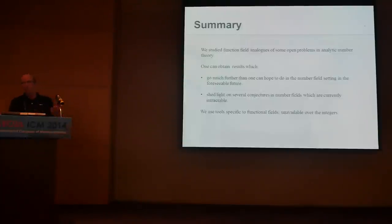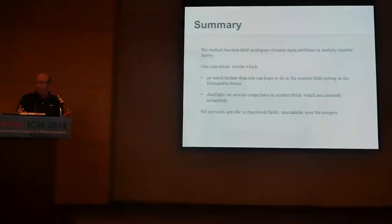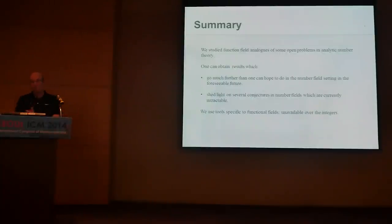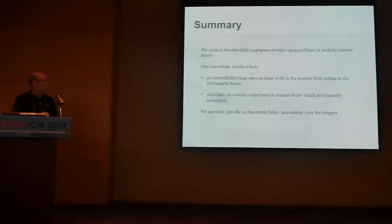What I want you to take from this talk is that we can study analogues of problems in analytic number theory for polynomials over finite fields, and in some cases solve problems which look impossible over the integers. In doing that, you can sometimes shed light on existing conjectures as a sanity check. There is one instance where we can go backwards — prove something for function fields and then go back and prove something for integers — but that's a more technical story. The reason we are able to do such things is that there are tools for function fields which right now don't exist for integers. Thank you.